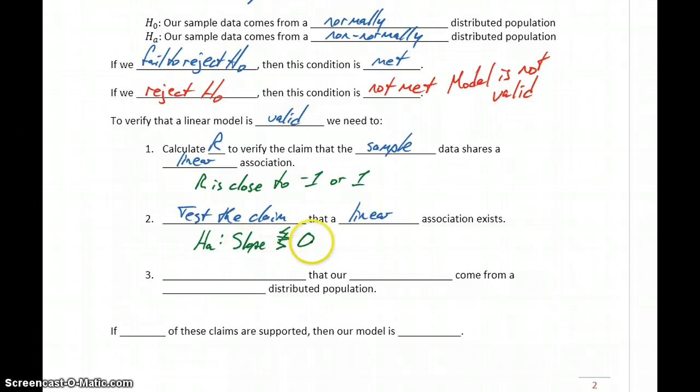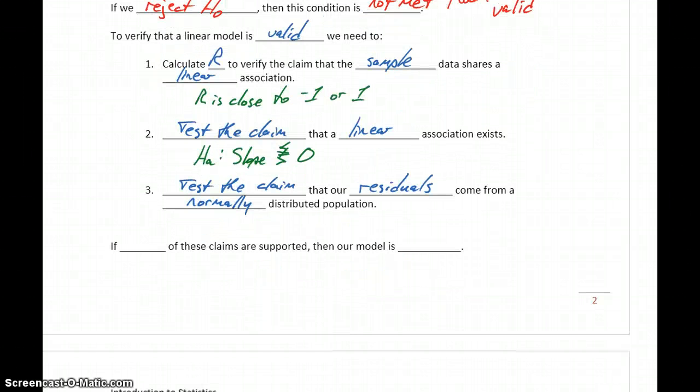So assuming we conclude that the slope is somehow different than zero, then we'll test the claim that our residuals come from a normally distributed population. Assuming that all three of these conditions are met, or all three of these claims are supported, then we could say that our model is valid.